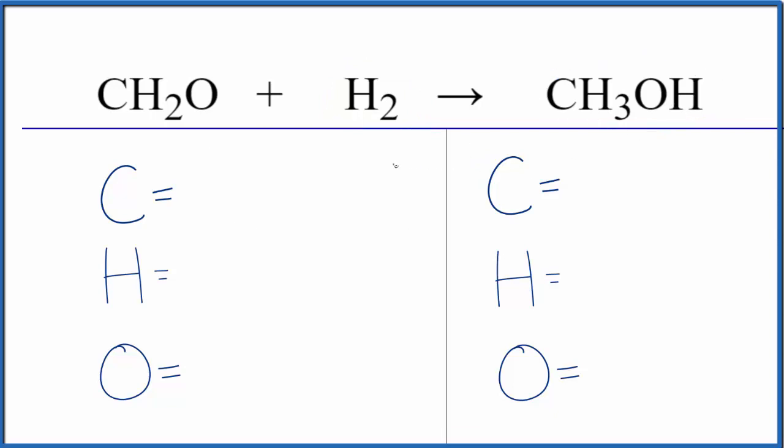So to do this, we're going to count the atoms up and then balance the equation. One carbon atom. Hydrogens, we have two. Be careful though, we have two more here. That often gets people. So we have a total of four.